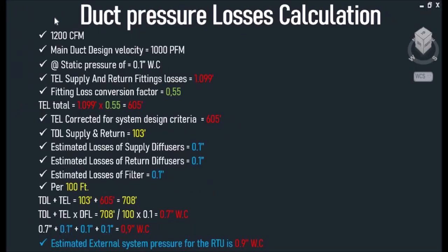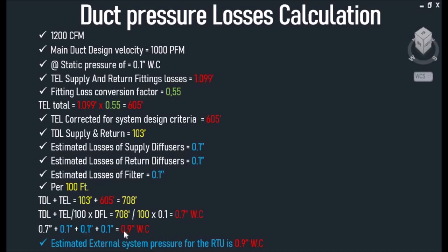Let's jump into the final calculation. With 1200 CFM, our main duct design velocity is 1000 FPM at a static pressure of 0.1 inch of water column. Total fitting losses for our supply and return duct is 1099 feet. The fitting loss conversion factor based on our velocity design is 0.55. Multiplying 1099 feet by 0.55 gives a total equivalent length of 605 feet, now corrected for our system design. Total duct length for supply and return is 103 feet. Using 0.1 inch of water column for the supply diffuser, return diffuser, and filters, adding all numbers together comes out to 0.9 inch of water column — this is the pressure exerted on our rooftop unit by the components we have calculated.